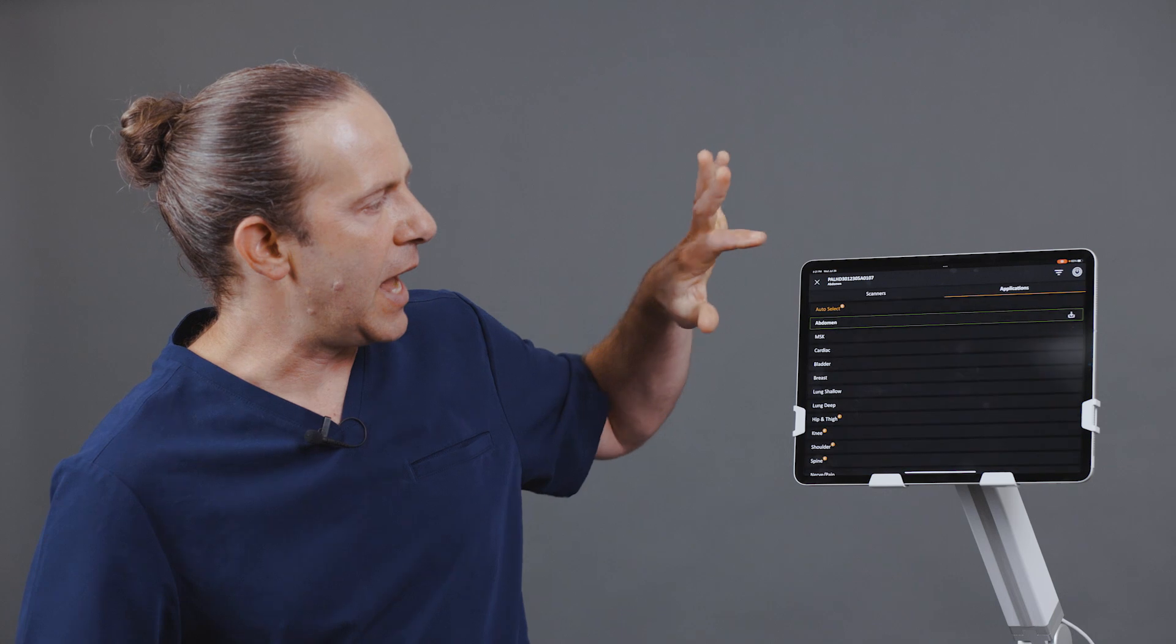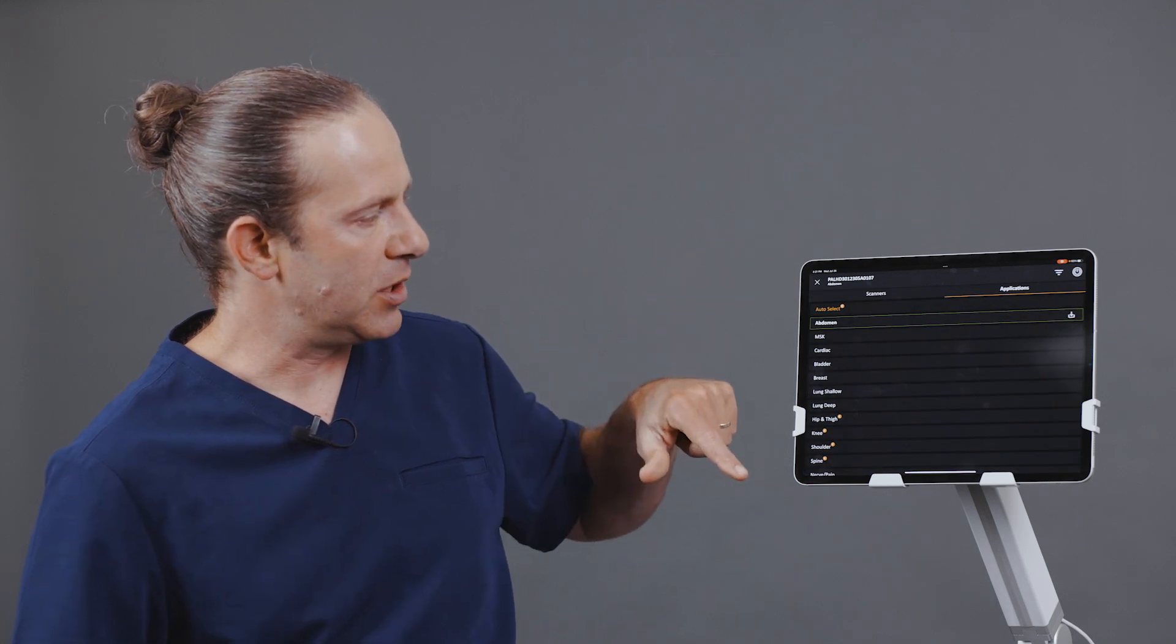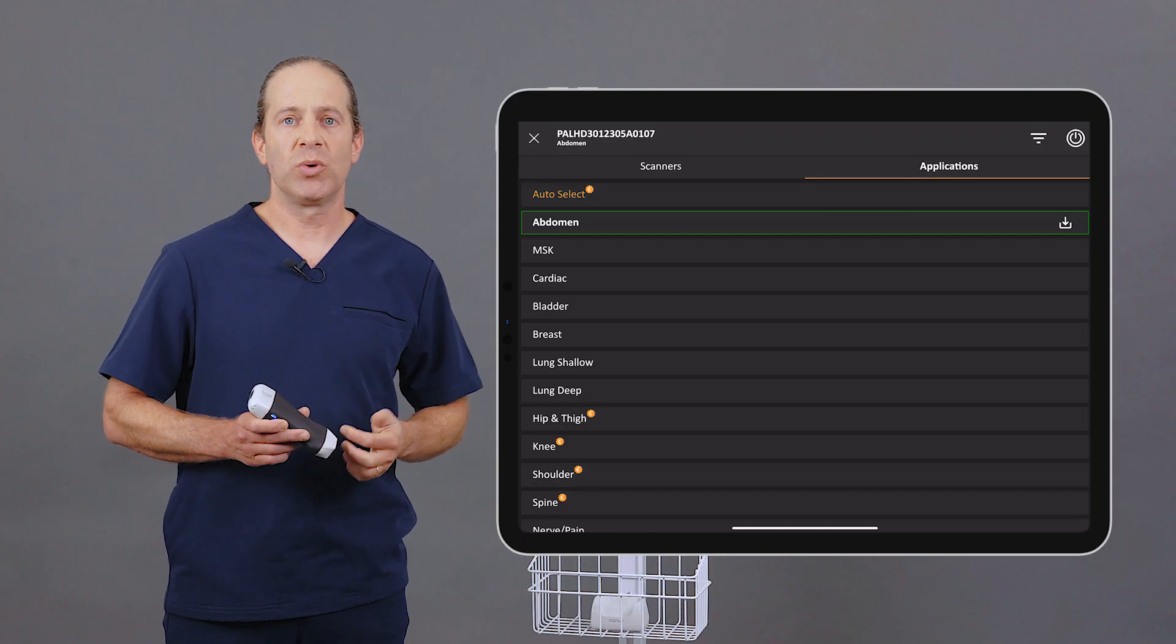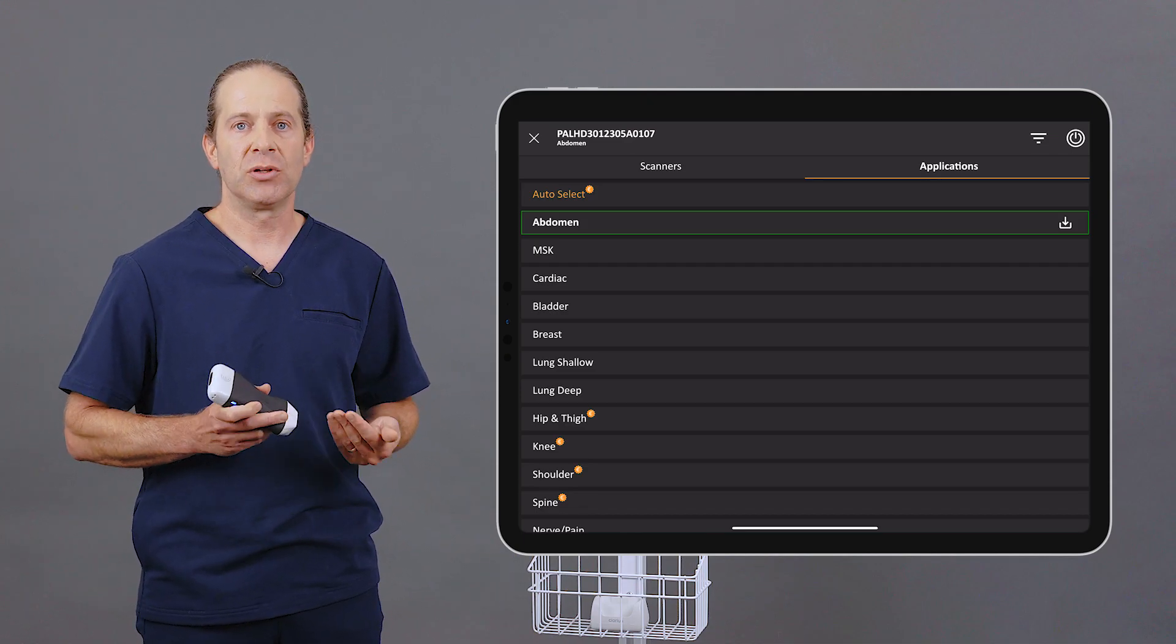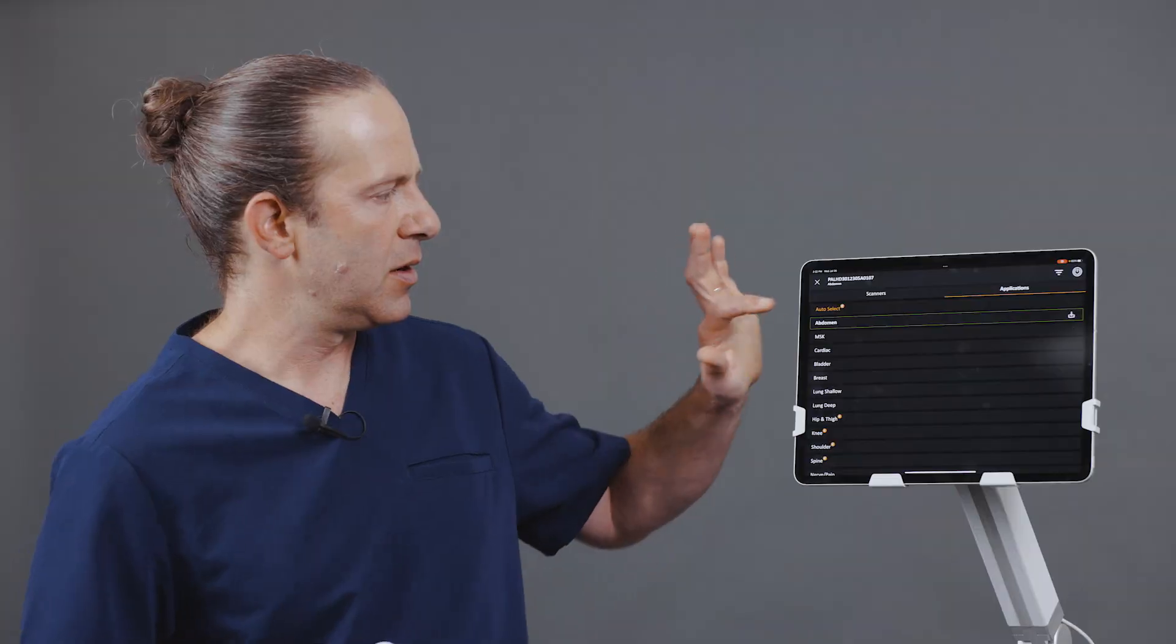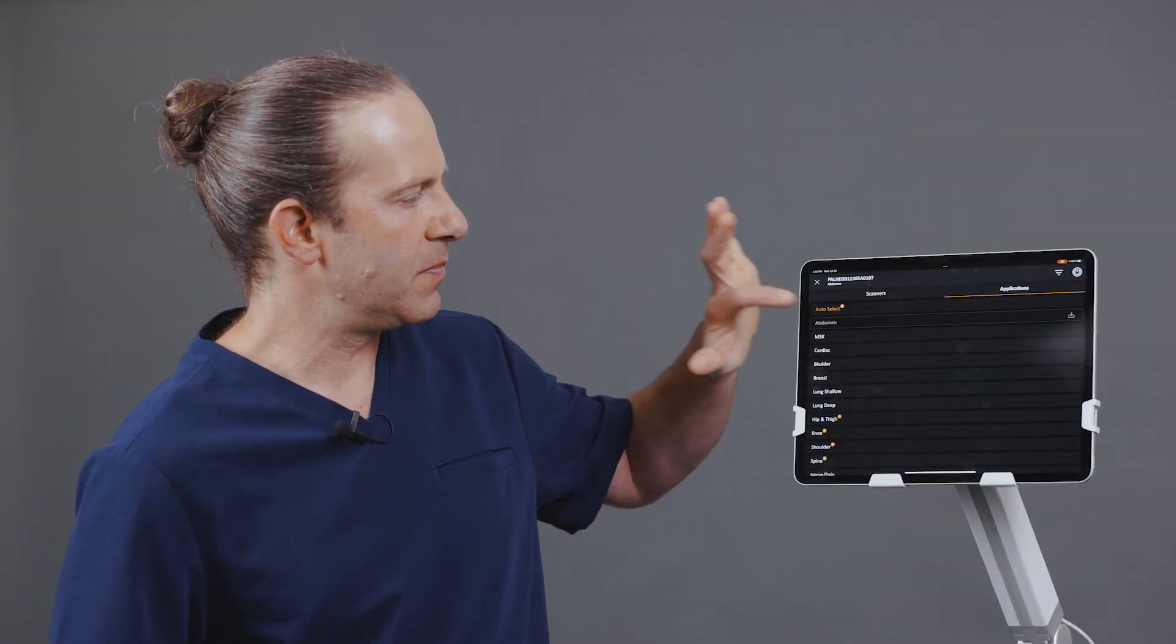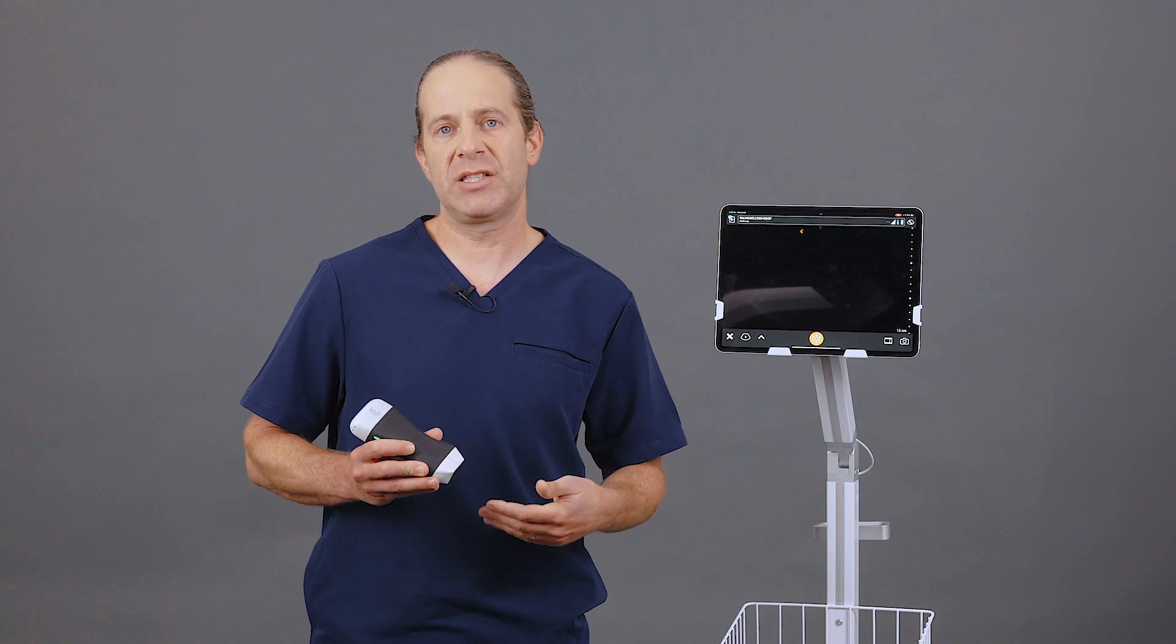Once the scanner is connected, we can go ahead and select our application. Different applications will default either to the Phased Array or the Linear Array, depending on what the optimal imaging strategy is. Here I'm going to select Abdomen, which is going to default to the Phased Array.